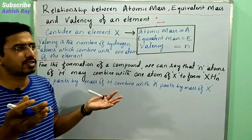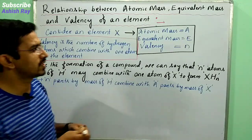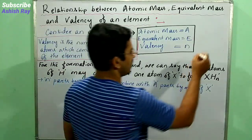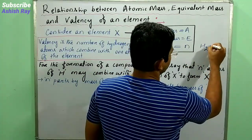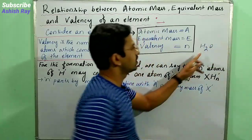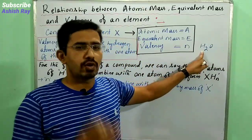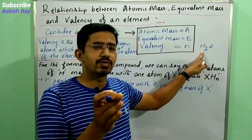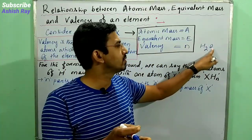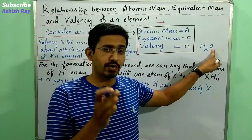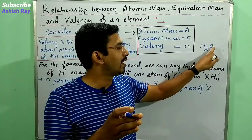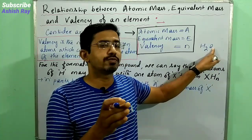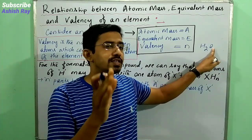So consider H₂O. Two atoms of hydrogen are combined with one atom of oxygen, so the valency of oxygen is 2.